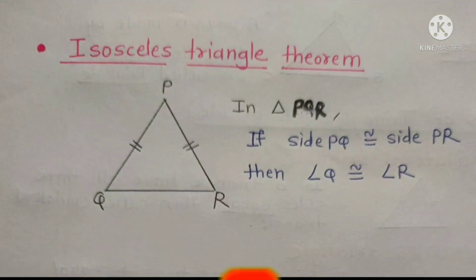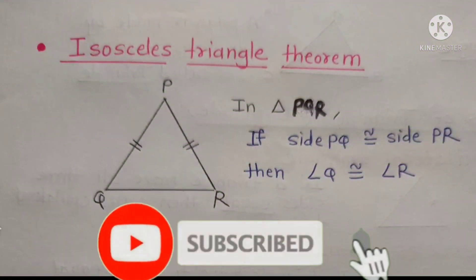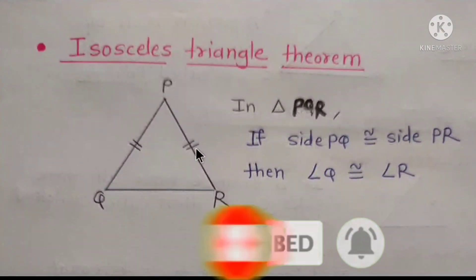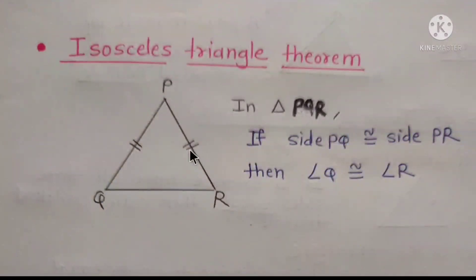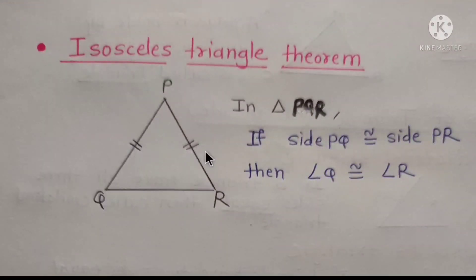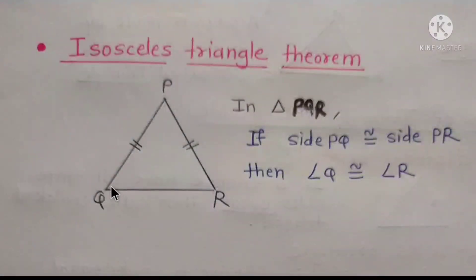Isosceles triangle theorem: if two sides of a triangle are congruent, then the angles opposite to them are congruent. So, in triangle PQR, if side PQ is congruent to side PR, then angle Q is congruent to angle R.